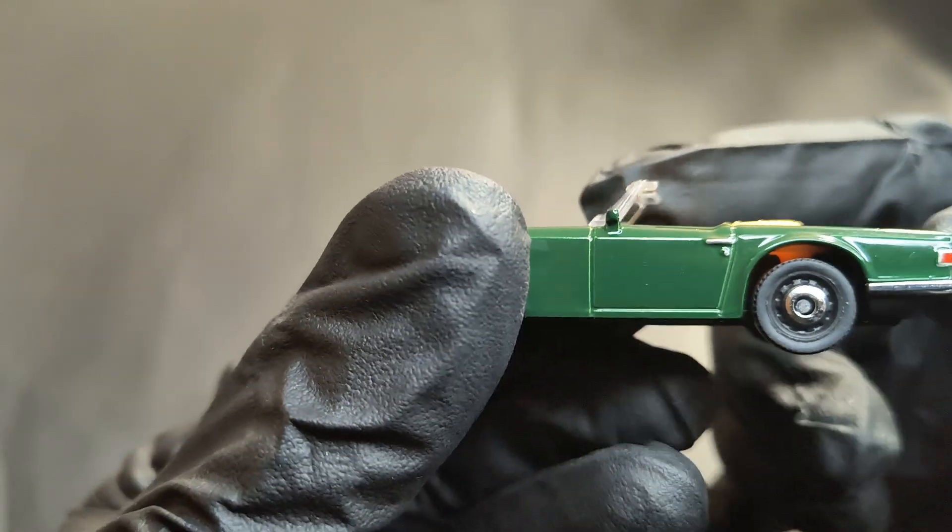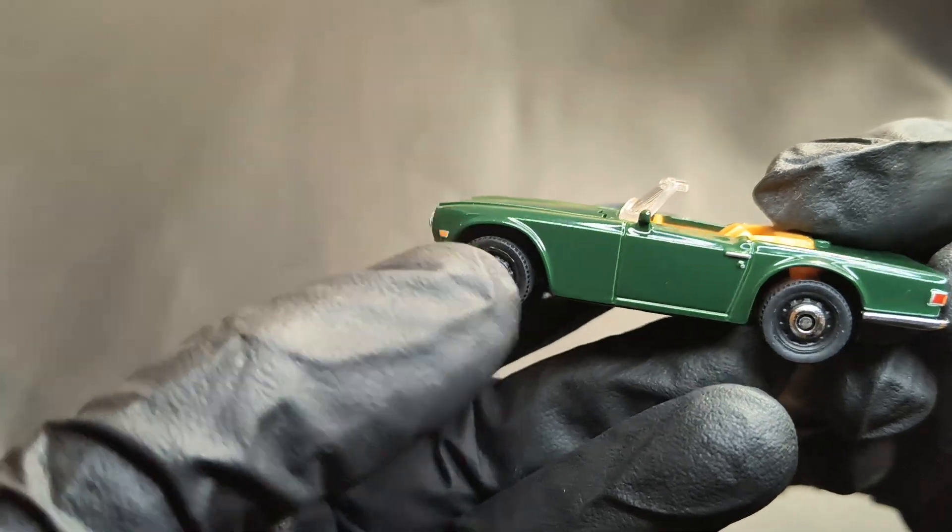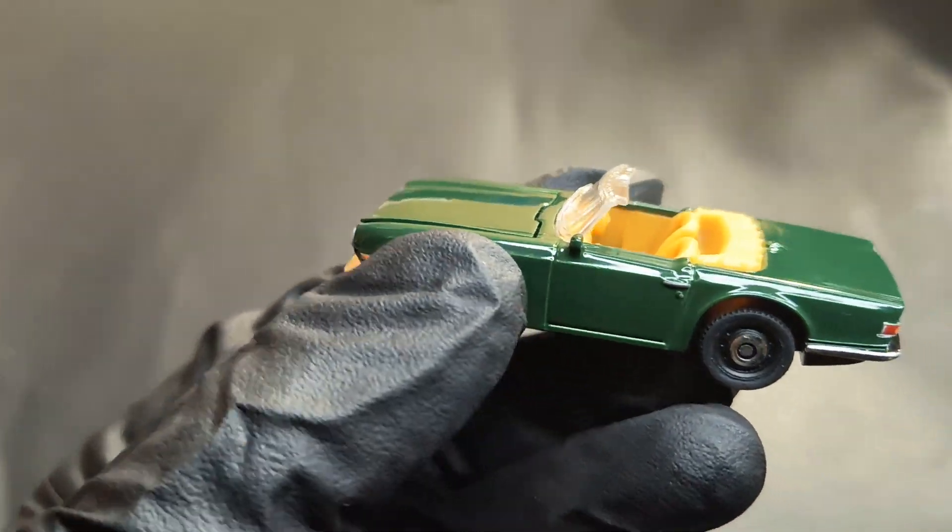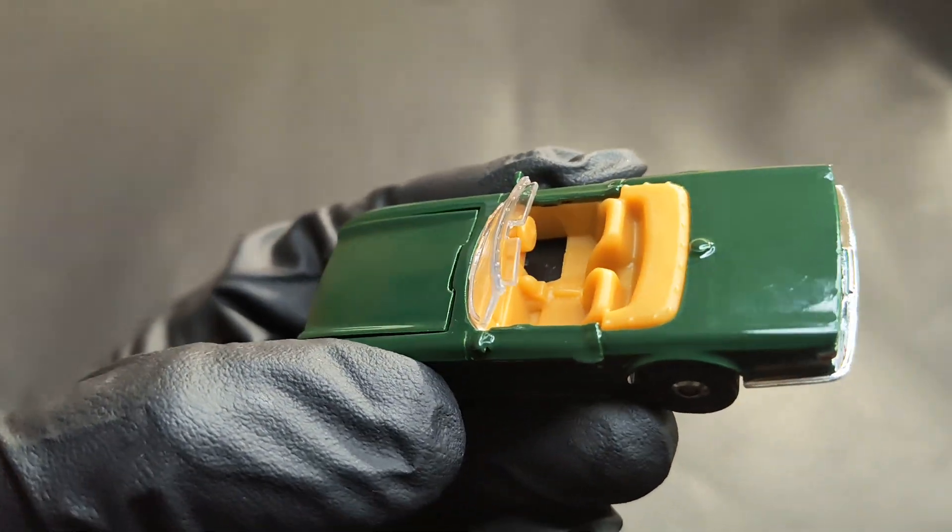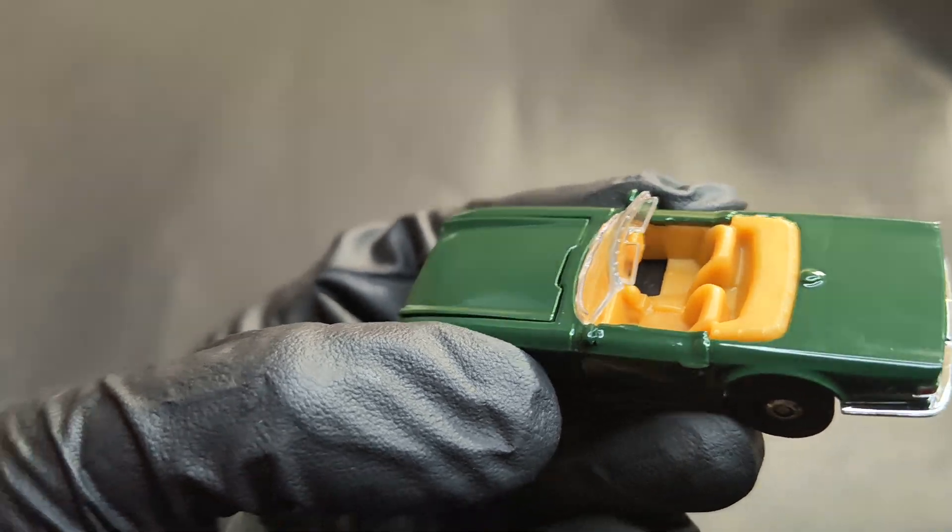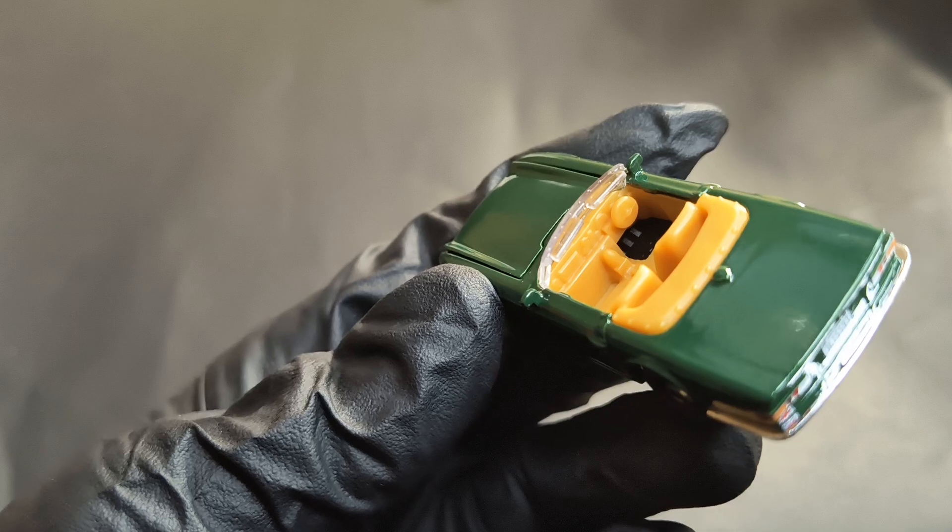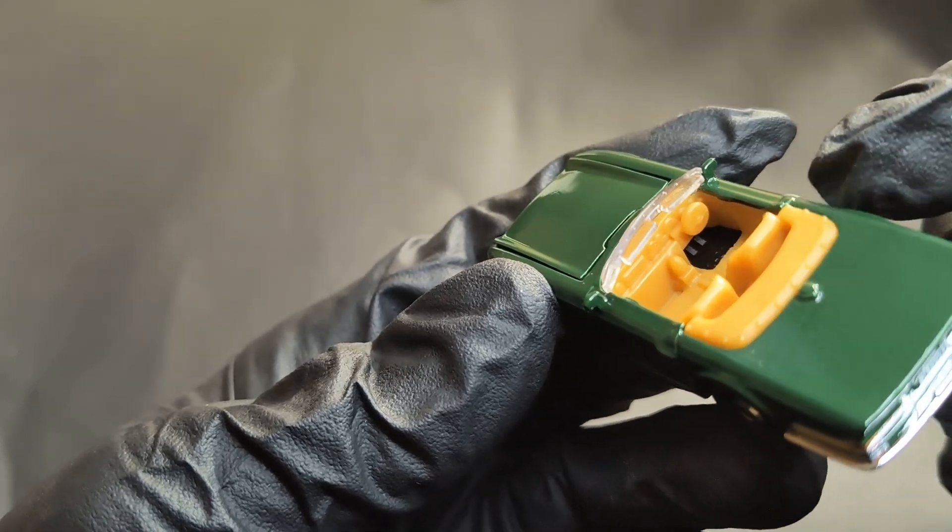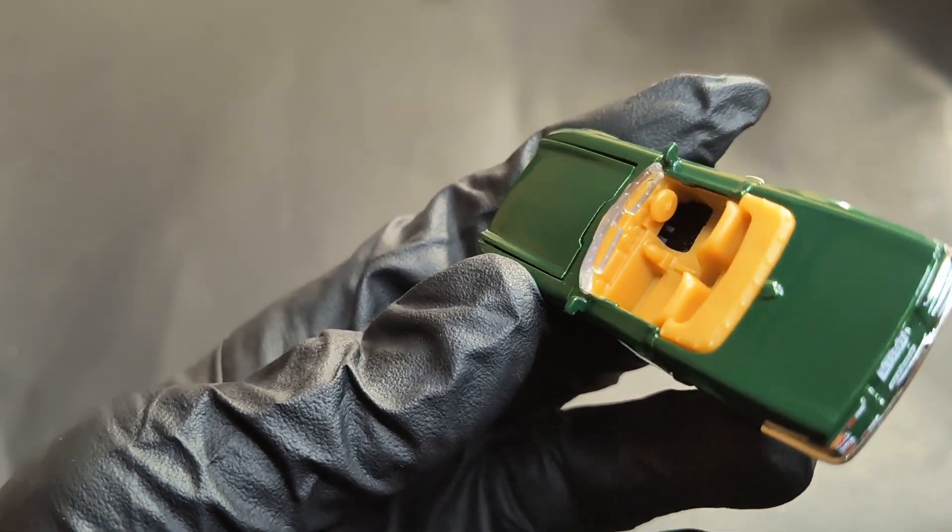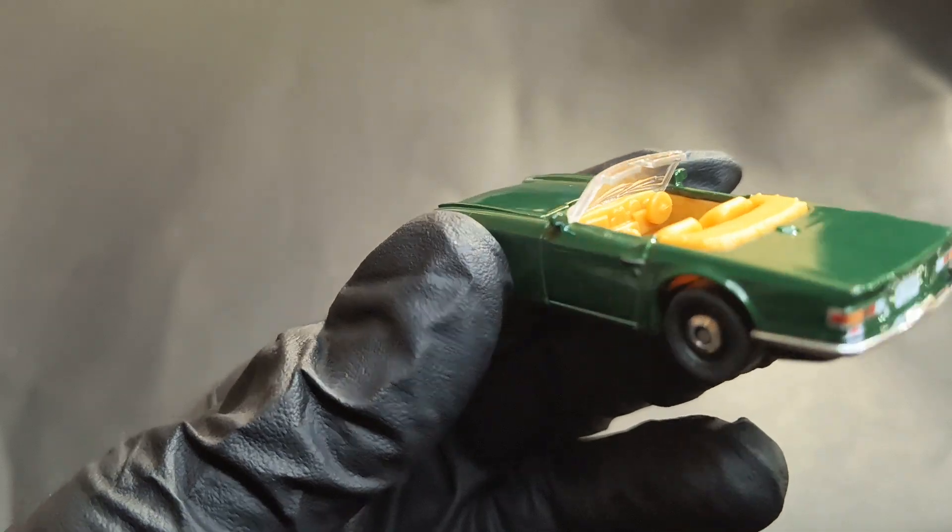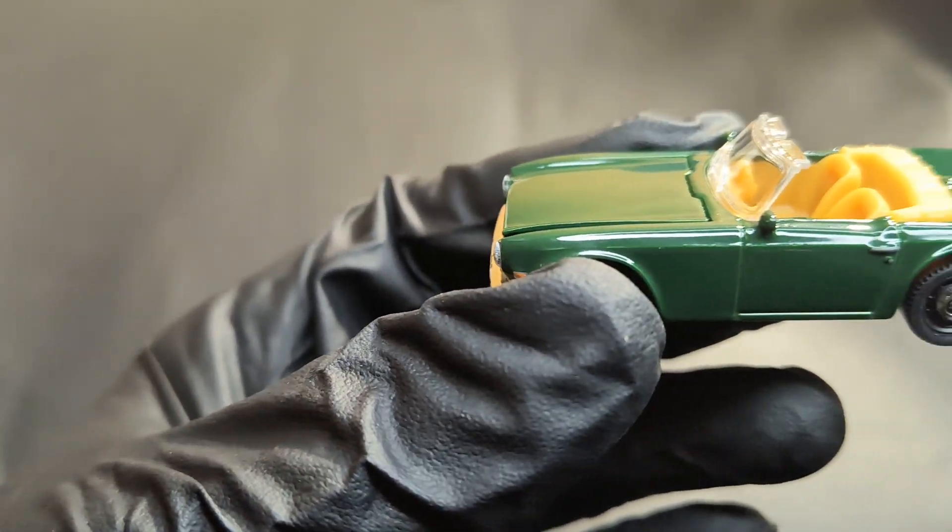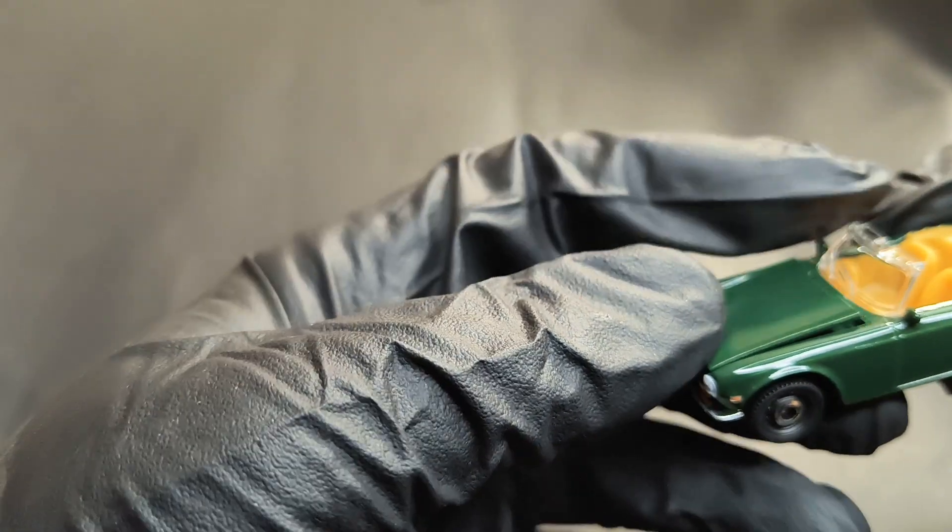Moving on to the passenger side, it's almost identical. No major differences here. The interior is finished in beige, and if you look closely—I don't know if my camera can show it—you can see the three pedals down there. Some nice details on this one. Looks really nice.